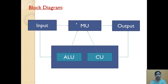A bus is an electrical roadway along which all signals are sent and all functional components are connected. There are two types of bus: one-way bus and two-way bus. One-way is represented by a single-direction arrow, and two-way is represented by arrows on both sides.